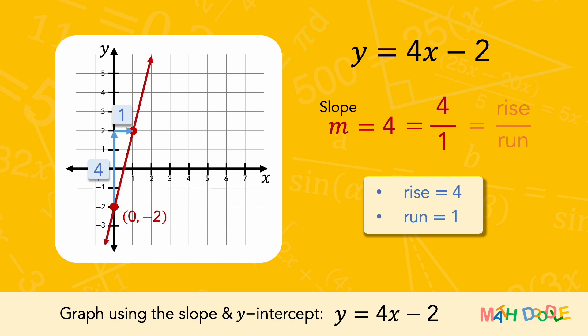Then, let's draw a line through these points and put arrows on both ends of the line. This is the line of y equals 4x minus 2.